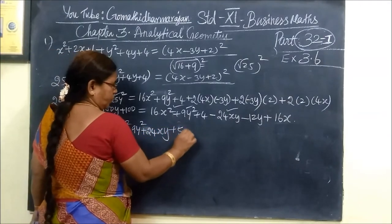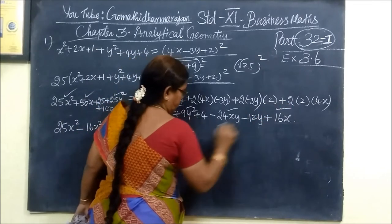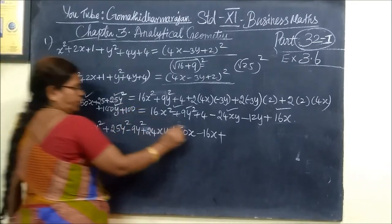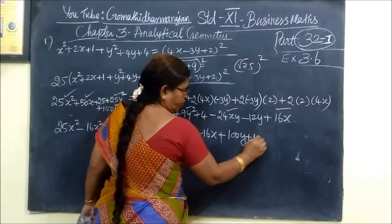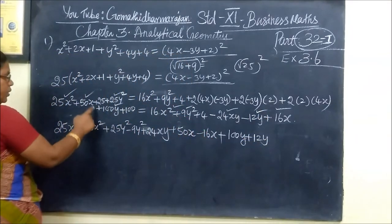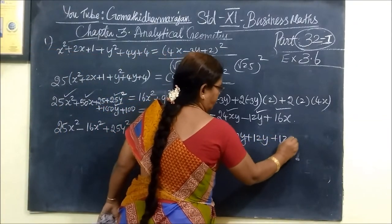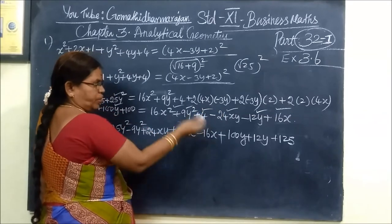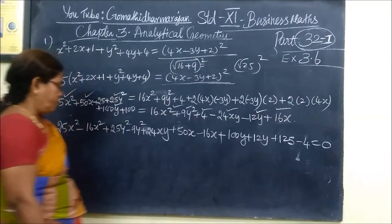So 50x squared minus 16x, then plus 100y, then 12y. After collecting all terms, the last constant is plus 125. Then plus 4 equal to 0.